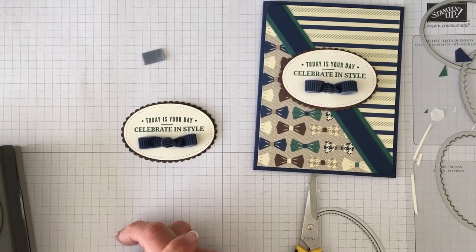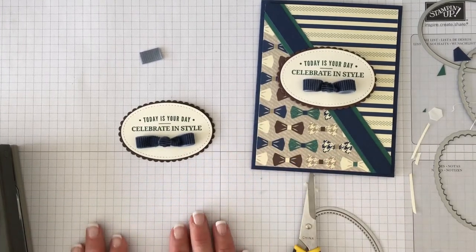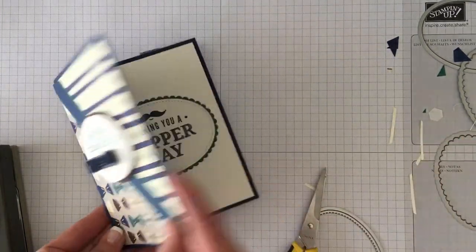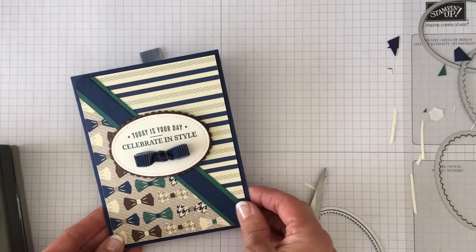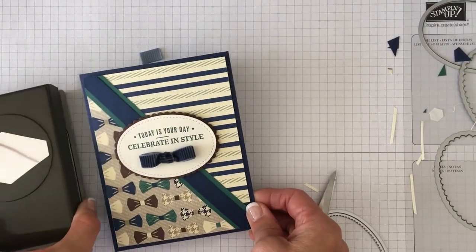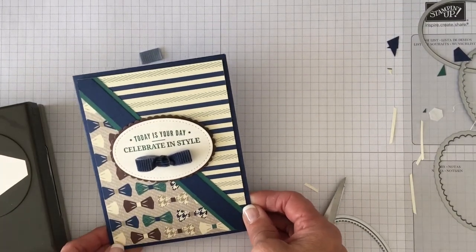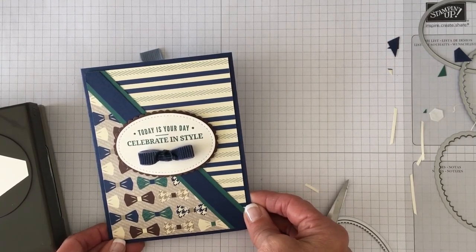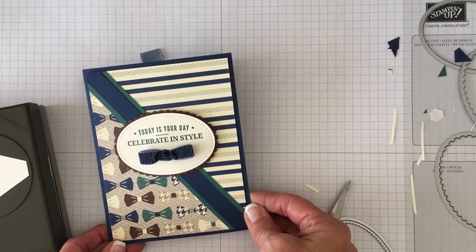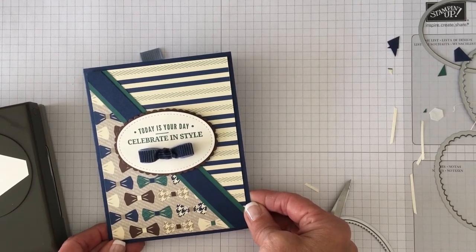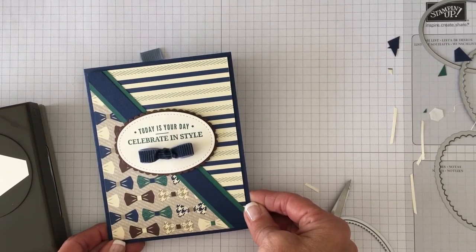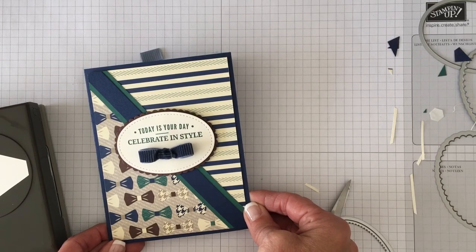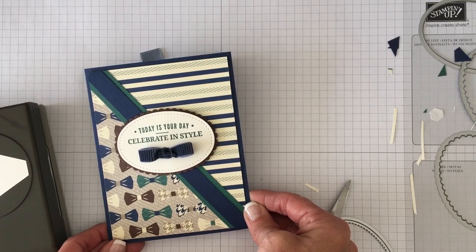So if you need to know any of the measurements or the materials that I've used to make this card, this truly tailored bundle with the tailored tag punch and the True Gentleman Designer Series paper, just visit my blog, cindyleebedesigns.com. If you have any questions, you can email me at cindyleebee at gmail.com or you can call or text me at 724-323-2296. Thanks for buzzing by, friends.